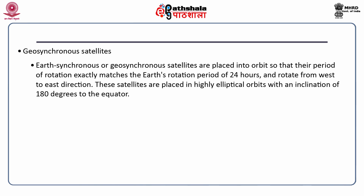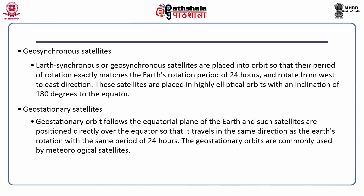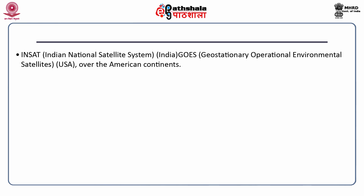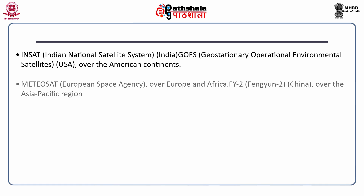Geostationary satellites follow the equatorial plane of the Earth and are positioned directly over the equator, traveling in the same direction as the Earth's rotation with the same period of 24 hours. The geostationary orbits are commonly used by meteorological satellites. Some examples include GMS, the Geostationary Meteorological Satellite of Japan, over the Asia-Pacific region at 140 degrees east; INSAT, the Indian National Satellite System of India; GOES, the Geostationary Operational Environmental Satellite of the USA for the American continents; Meteosat of the European Space Agency covering Europe and Africa; and FY-2 of China, used over the Asia-Pacific region.